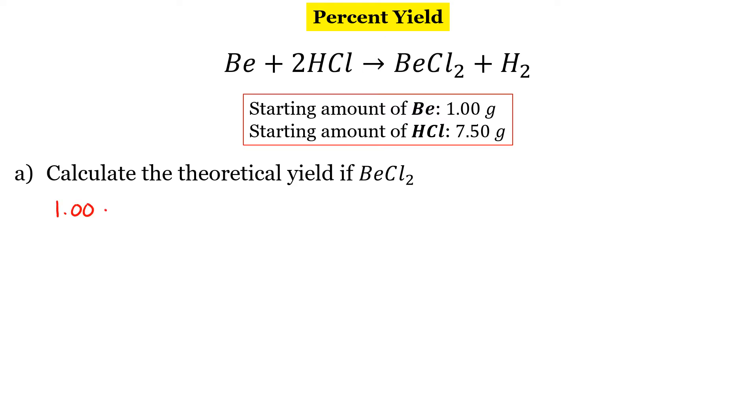So we have 1.00 grams of beryllium. Beryllium has a molar mass of 9.01, so that's for every one mole. And our ratio of beryllium to our product is 1 to 1. And then our product's molar mass is 79.91.